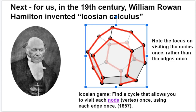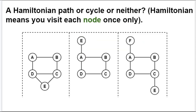Let's carry on with this. I'm going to leave this with you for homework as well. I'm going to ask you: can you find a Hamiltonian path, or cycle, or neither? One of these pictures contains a Hamiltonian path, one contains a Hamiltonian cycle, and one contains neither. I want you to identify which is which as homework.